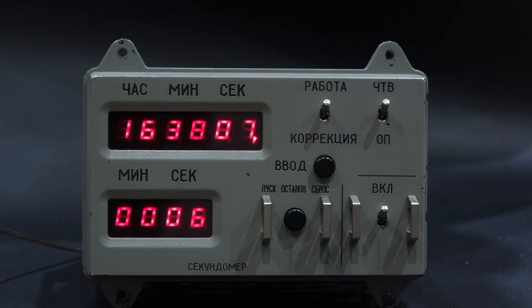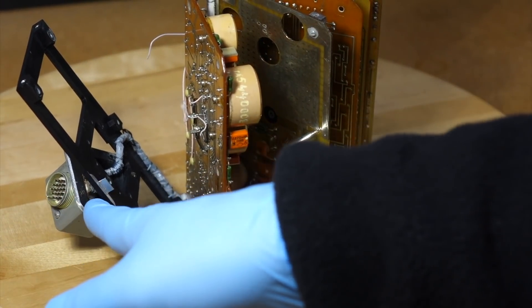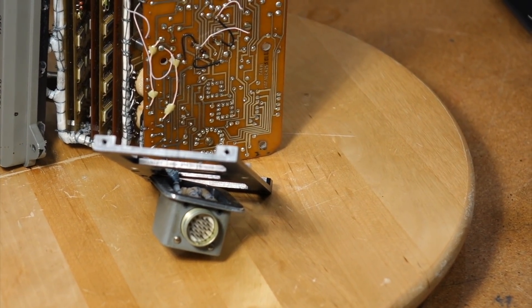So far we have used the clock just by itself, simply connected to a power supply. But in normal usage, it's connected to the spacecraft by a 19-pin connector. What do all those connections do?